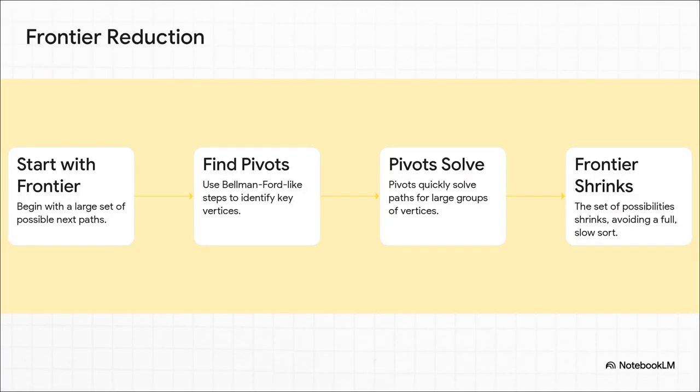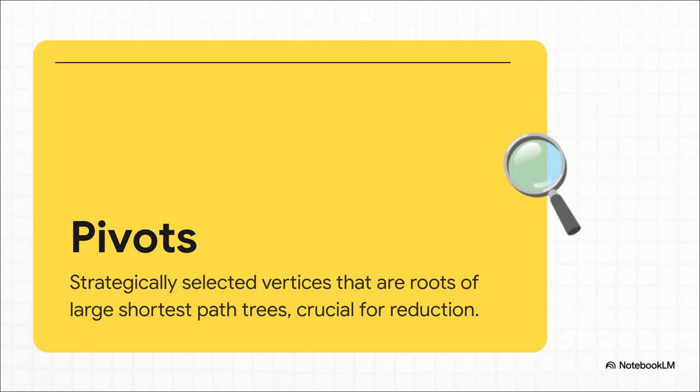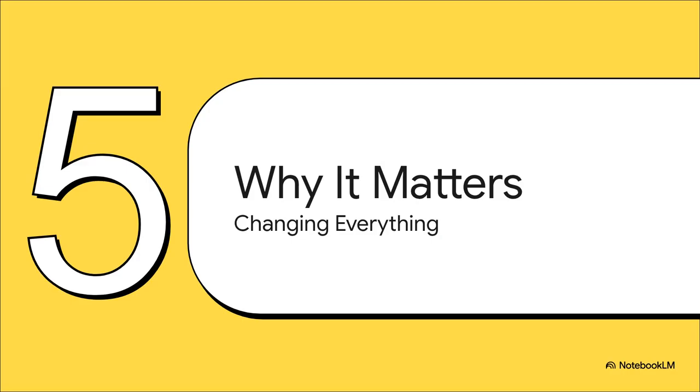So here's the game plan in action. The algorithm starts with what's called a frontier. That's all of its possible next moves. Now, instead of slowly sorting that whole list like Dijkstra would, it uses a few quick moves inspired by Bellman Ford to pick out a handful of strategic pivots. These pivots then go and solve the paths for huge chunks of the network all at once. And just like that, the frontier shrinks dramatically, all without ever doing a full sort. These pivots, they're the secret weapon. They are those leaders in the crowd. By finding these super efficient points, the algorithm can work so much smarter. It just keeps breaking the problem down into smaller and smaller pieces, letting the pivots do all the hard work for their own little neighborhoods. This totally dodges the big, slow sorting comparison that held Dijkstra back for 60 years. And just like that, the barrier is broken.